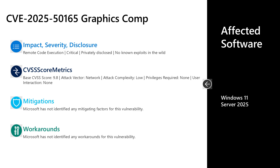Next, I'll talk to a critical remote code execution vulnerability in the graphics component of Windows, documented as CVE-2025-50165. This one was privately disclosed to Microsoft with no known exploits out in the wild. It has a base CVSS score of 9.8 — the second vulnerability in the set with that score. The attack vector is over the network, the attack complexity is low, no privileges are required, and no user interaction is required to leverage this vulnerability. There are no documented mitigations or workarounds. The affected software is a smaller set: Windows 11 and Server 2025.